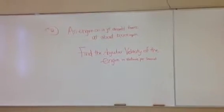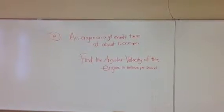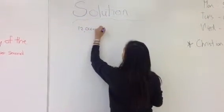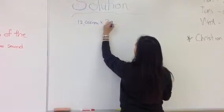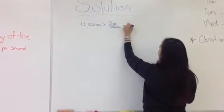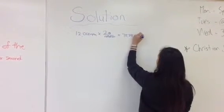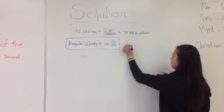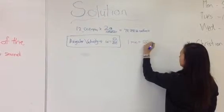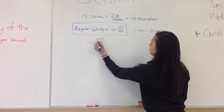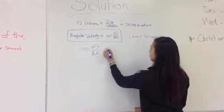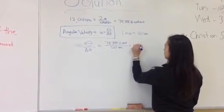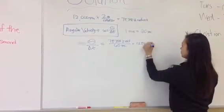Problem number 2 is about angular velocity. An engine on a jet aircraft turns at about 12,000 rotations per minute. Find the angular velocity of the engine in radians per second. First, convert 12,000 rotations per minute into radians by multiplying by 2 pi per rotation, giving 75,398.2 radians per minute. Since a minute equals 60 seconds, we divide 75,398.2 radians by 60 seconds, which equals 1,256.6 radians per second.